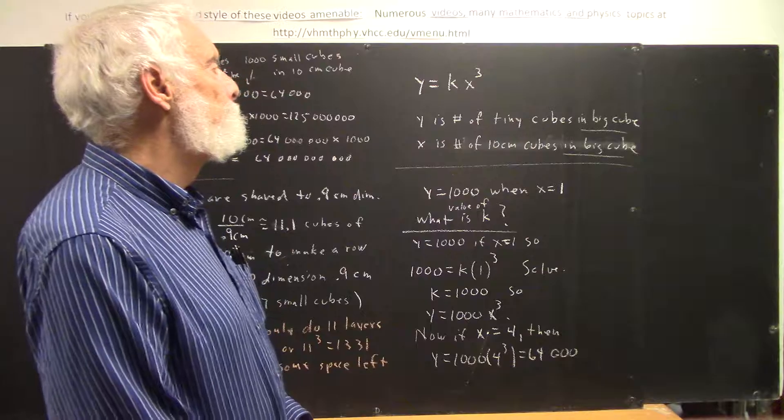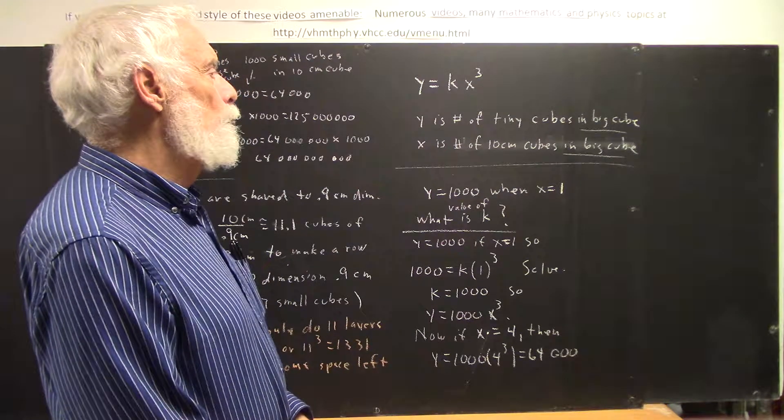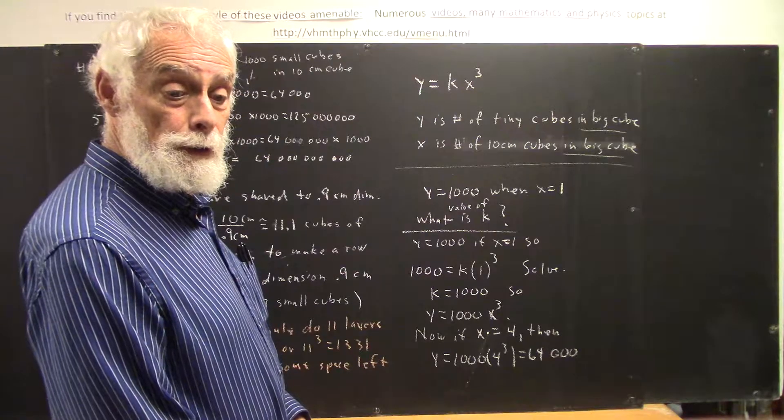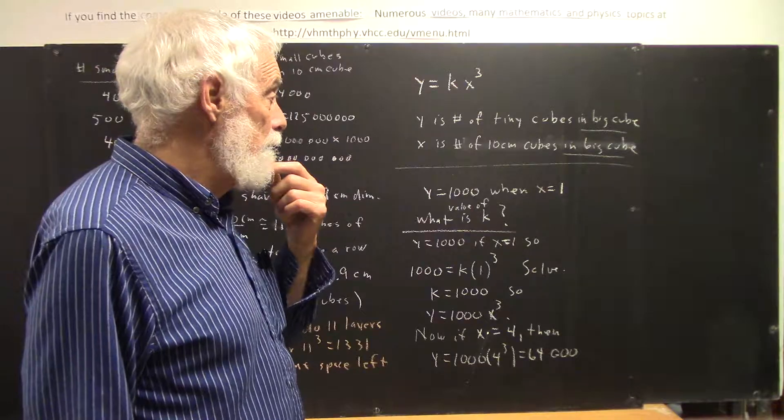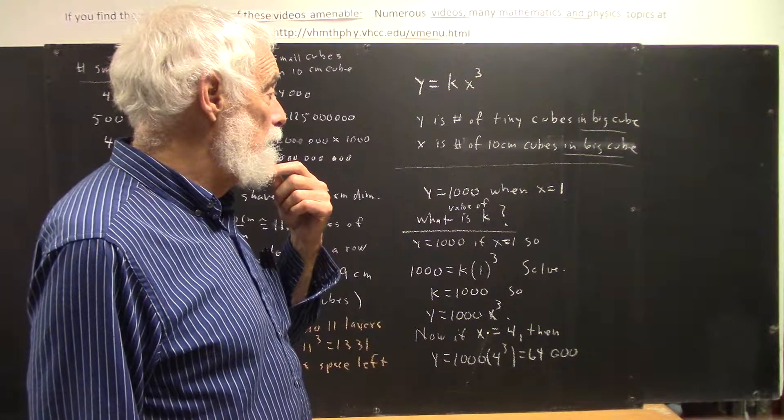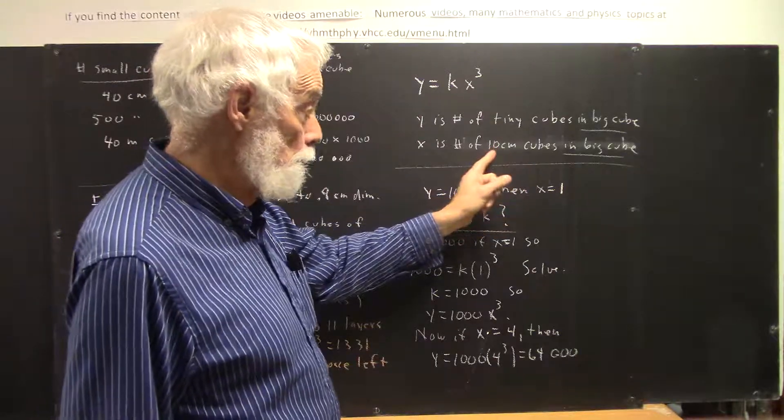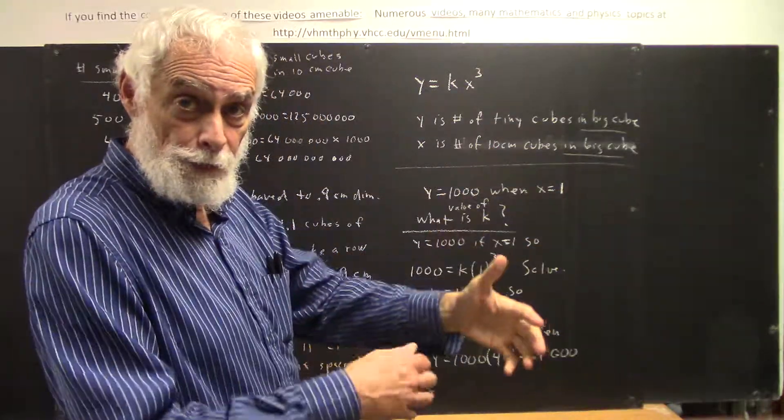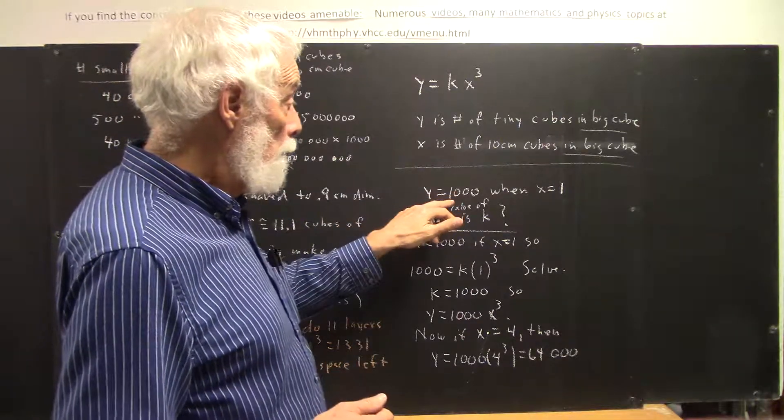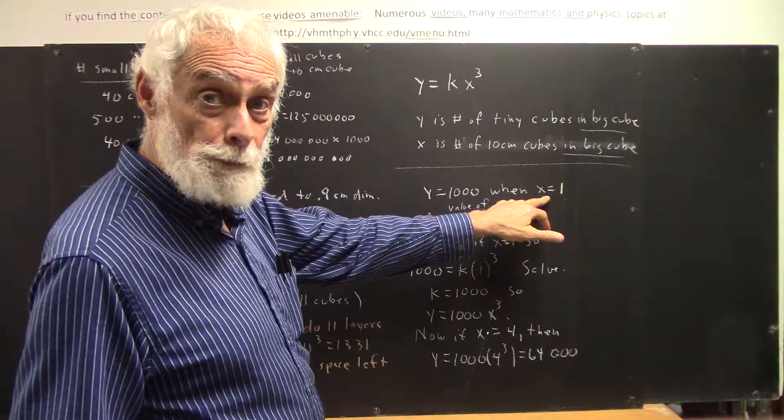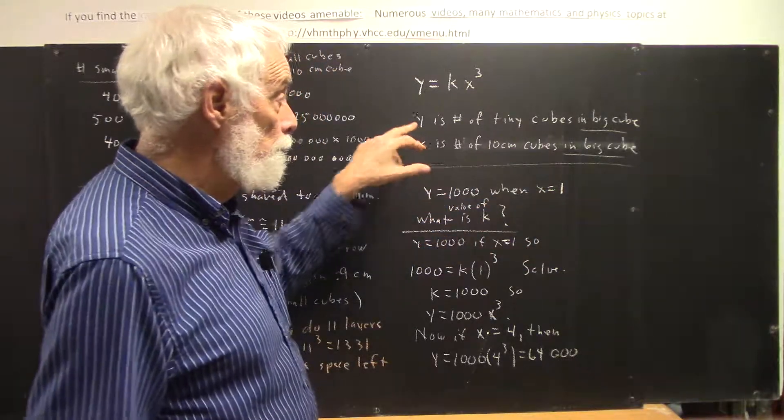What we know is, from the one cube that we've looked at, is that if you have one 10 centimeter cube in your big cube, that is, your 10 centimeter cube is your big cube, then y has to equal 1,000 when x equals 1. Again, when you have one 10 centimeter cube, you have 1,000 little cubes.